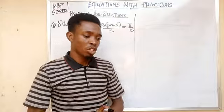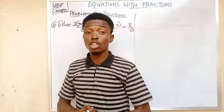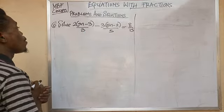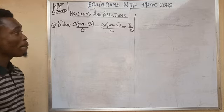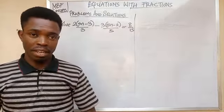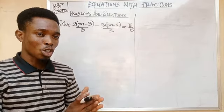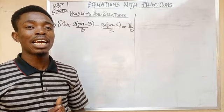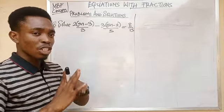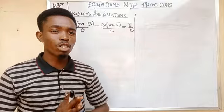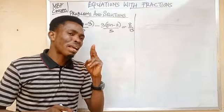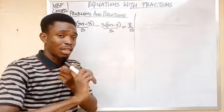Welcome back. We now solve question number 6, similarly to previous questions. We are asked to solve: 2 times (5n minus 3) all over 3, minus 3 times (5n minus 2) all over 5, equals 8 over 15. This question has a little more complexity — it combines equations with fractions and equations with brackets.